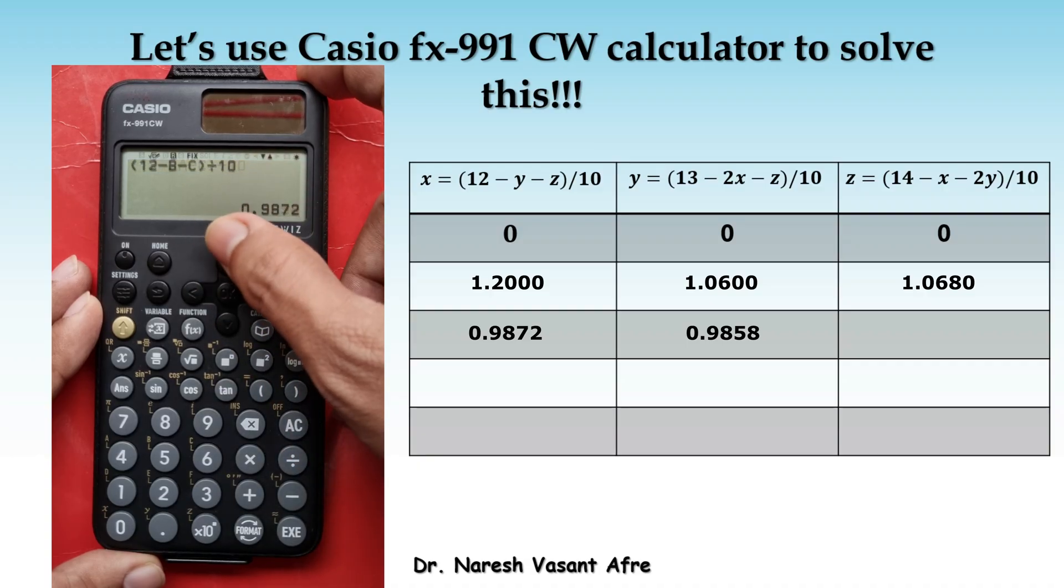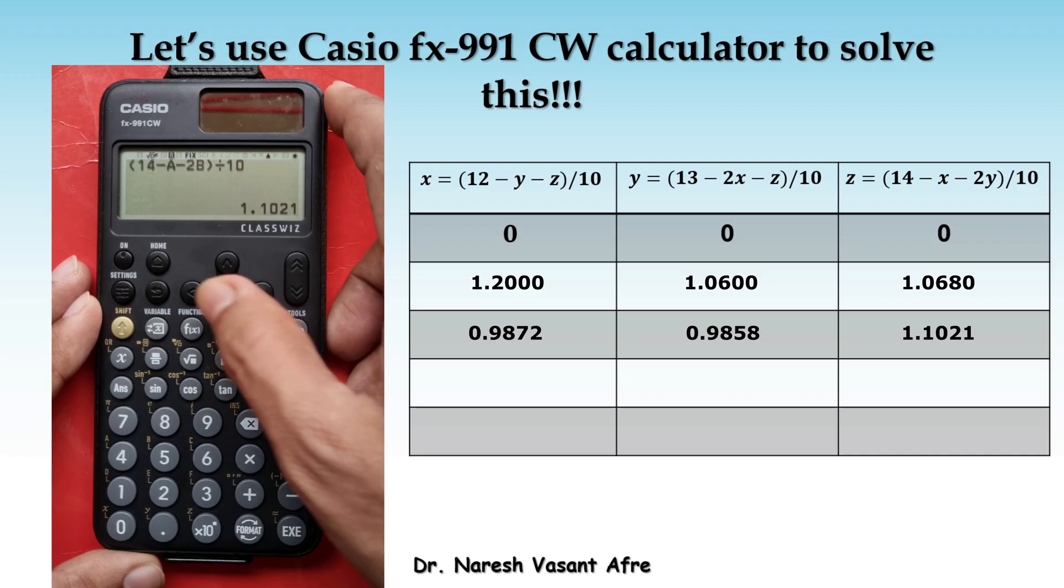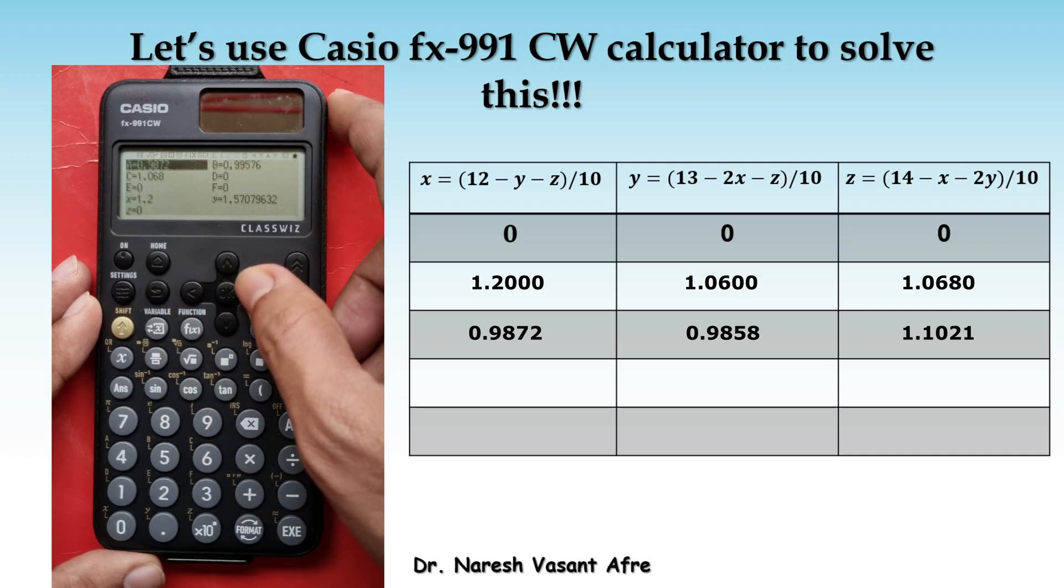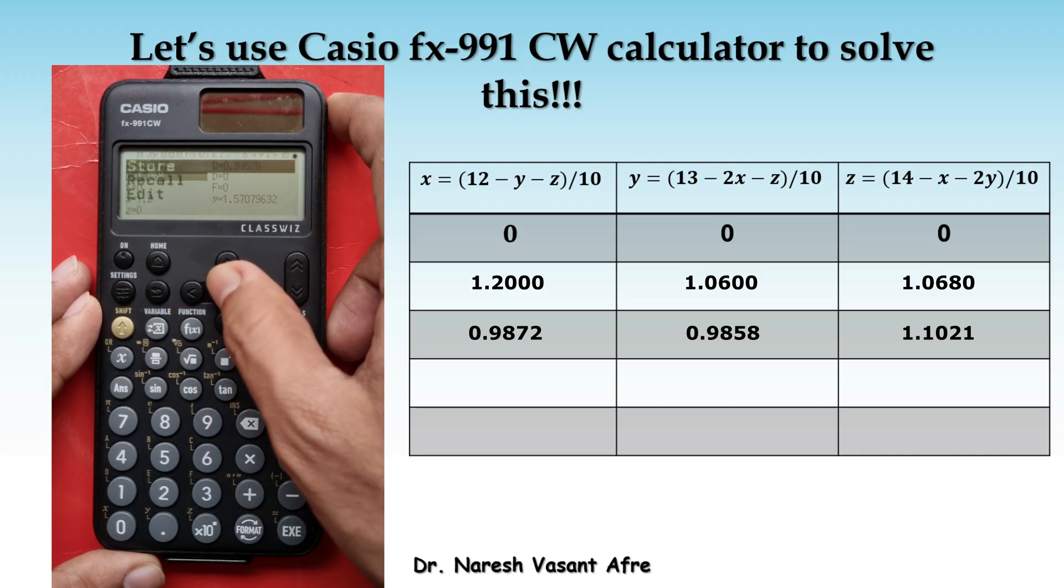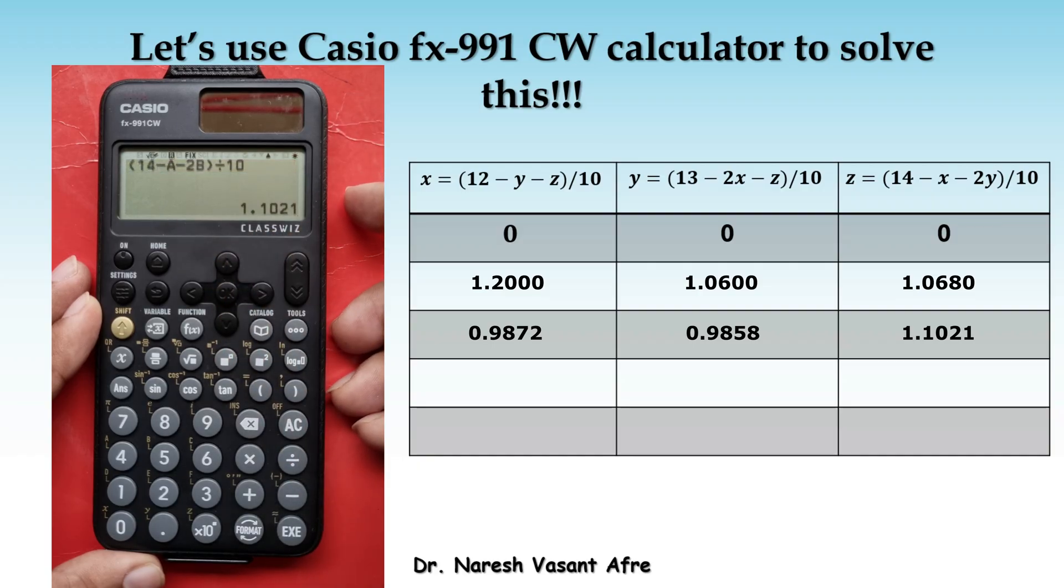Now, we will simply go back to the formula of Z and we will simply press equal to. That will give you the updated value of Z. We are going to store this updated value of Z in C again. That means all these A, B, C are getting updated at the same time. And now we can repeat the process.